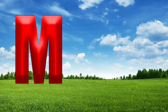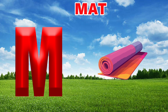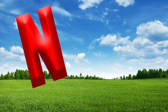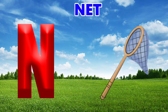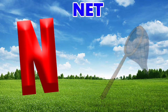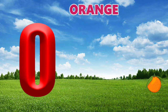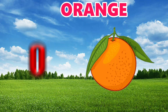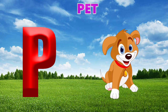M is for mat, m-m-mat. N is for net, n-n-net. O is for orange, o-o-orange. P is for pet, p-p-pet.